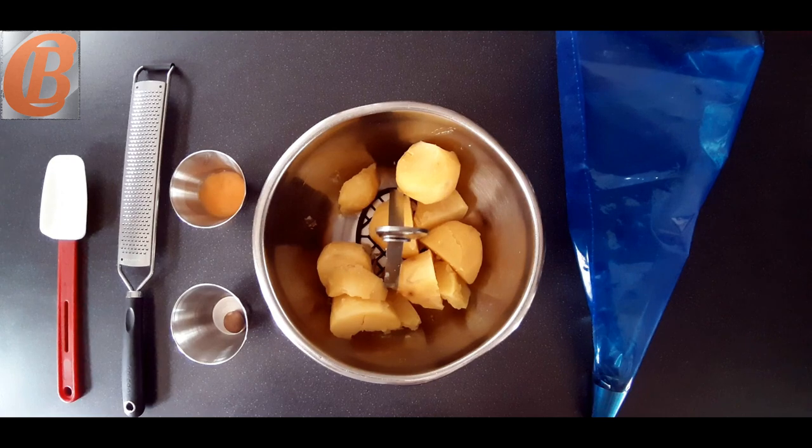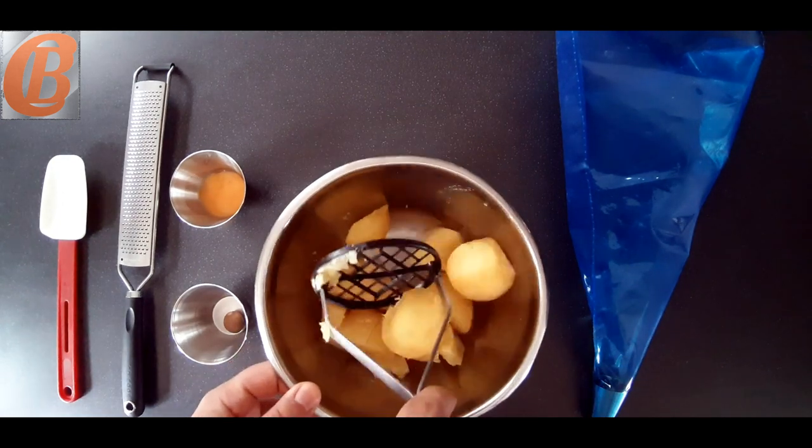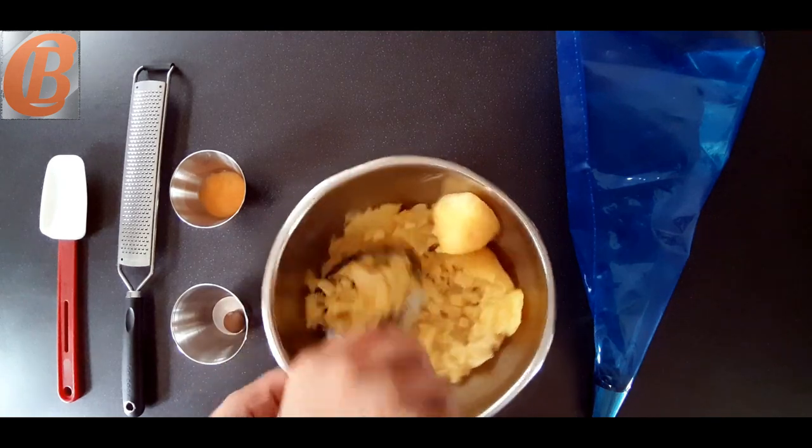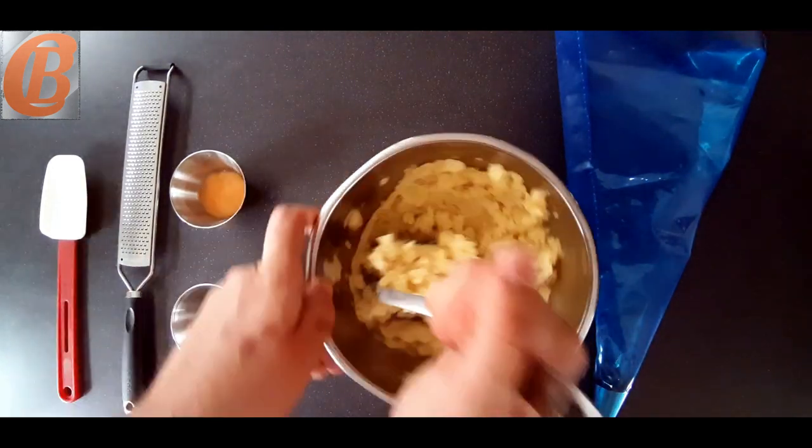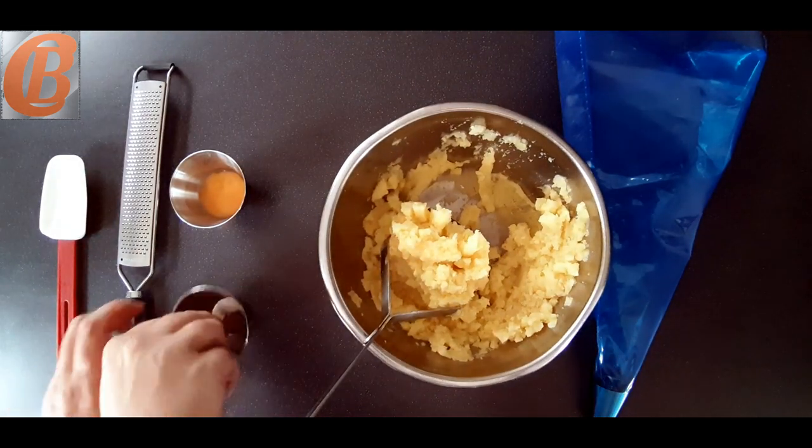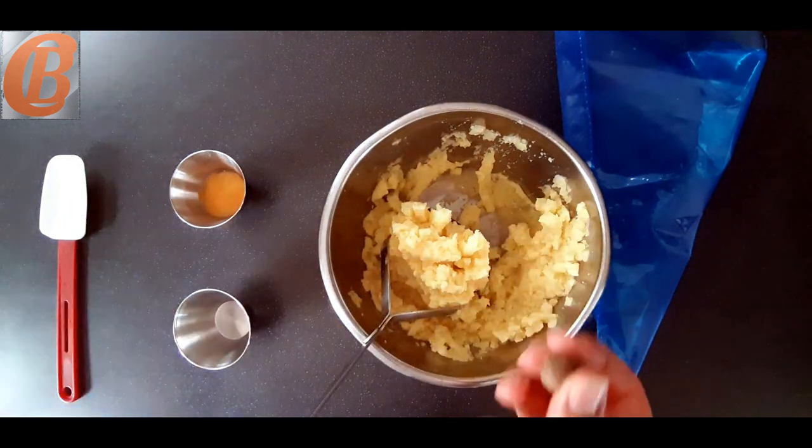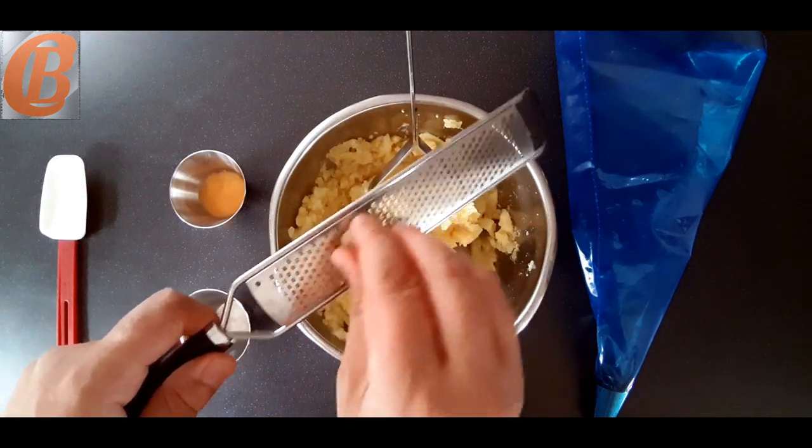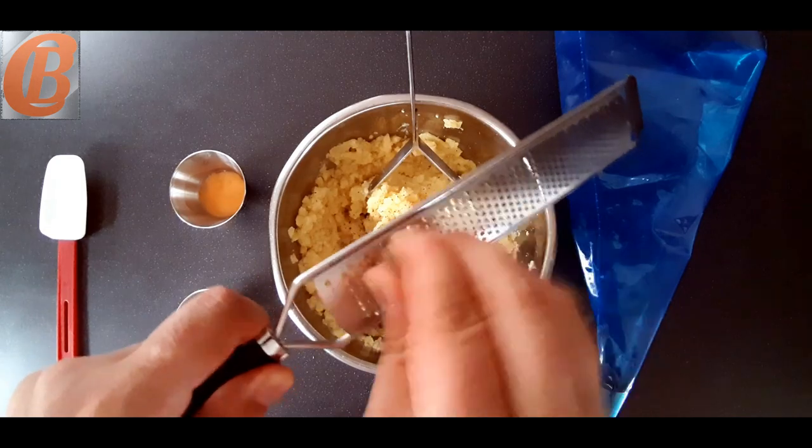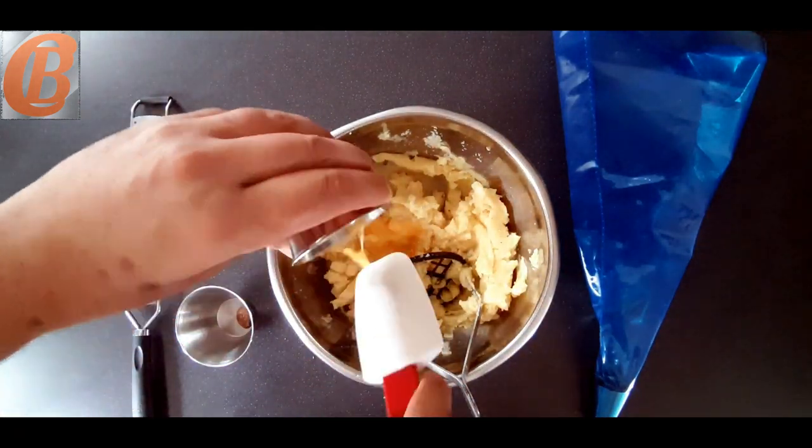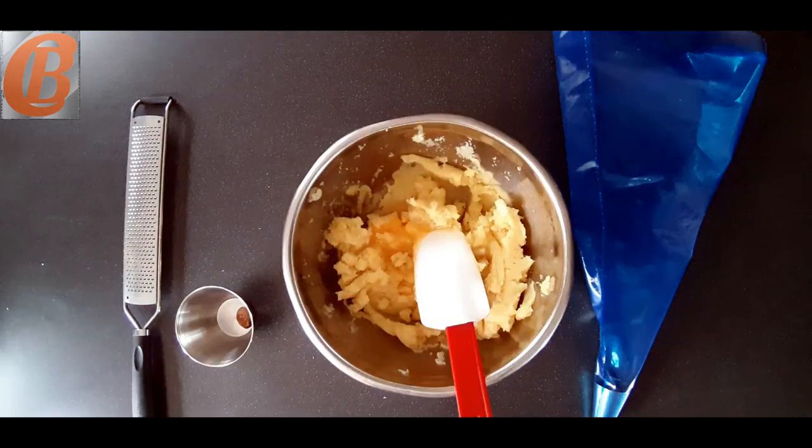Okay, on to the duchess potatoes now. So I've just peeled and boiled some potatoes until they are soft, and then I've let them just steam dry for a few minutes before mashing. And now we're just going to mash until they're completely smooth with no lumps whatsoever. Once smooth, we'll grate in our nutmeg, season with a little bit of salt and pepper, and finally add our egg yolk and mix very well.